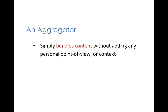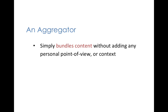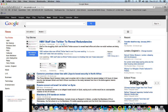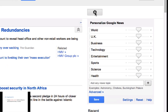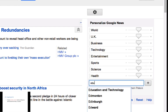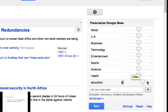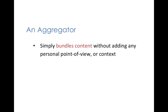Another way to look at it is to distinguish a curator from an aggregator. An aggregator simply bundles content without adding any personal point of view. Think of Google News — it is simply a collection of news items collected automatically using algorithmic filters. You could compile news on a particular place, person or event using Google News, but it does not add any layer of meaning. A user has to use their own insight and discretion to interpret the information.